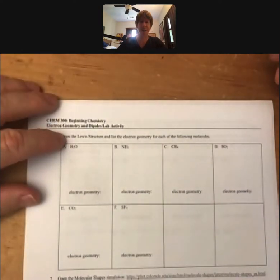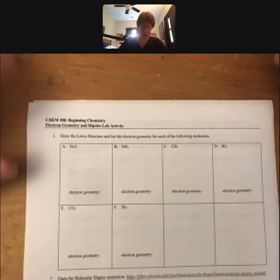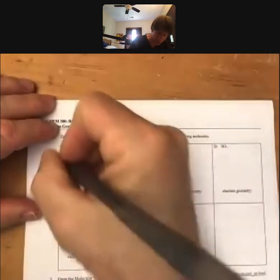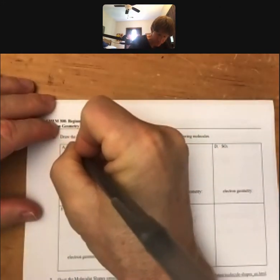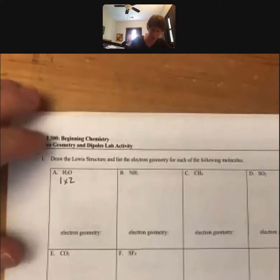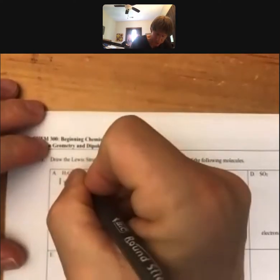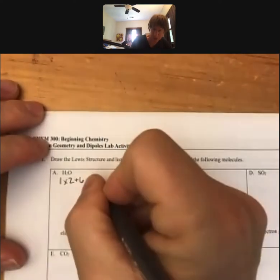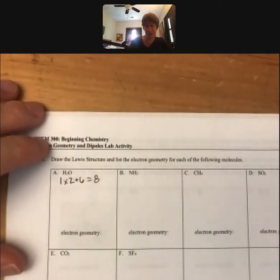So our process looks like this: count up the number of valence electrons. Each hydrogen has one and there are two hydrogens, so that's two times two. Then each oxygen has six. That's a total of eight valence electrons.